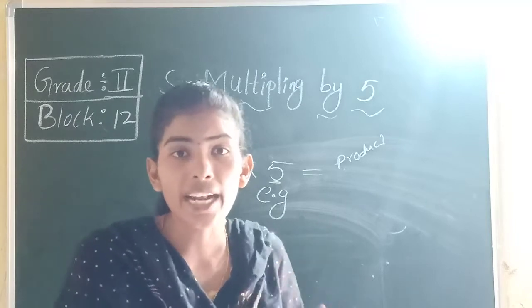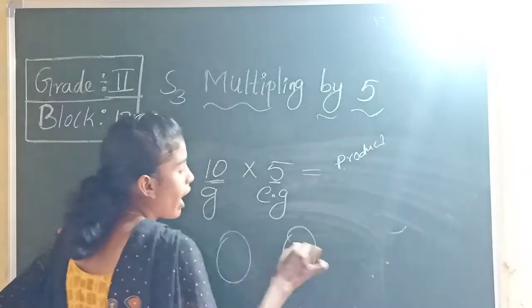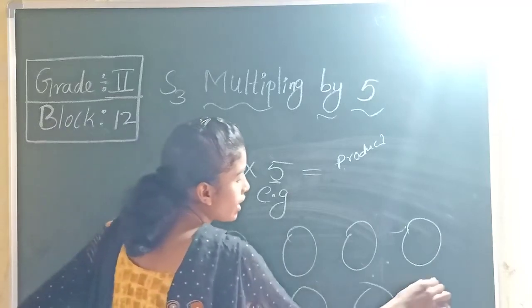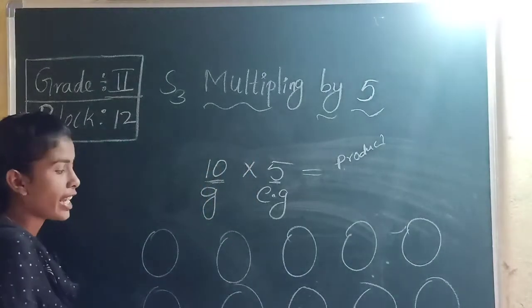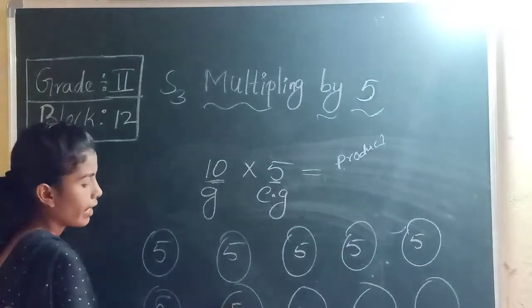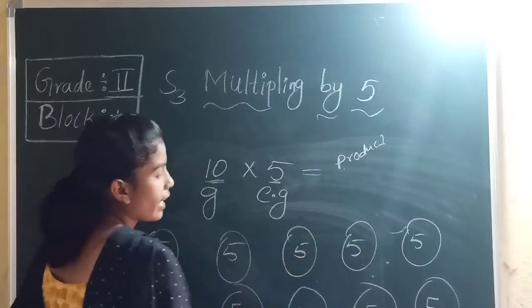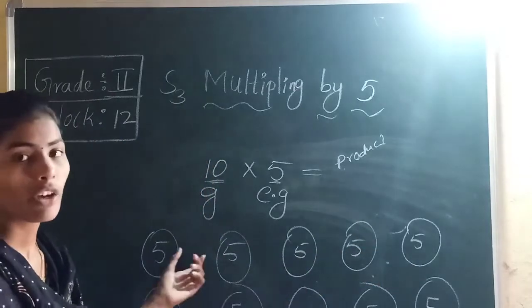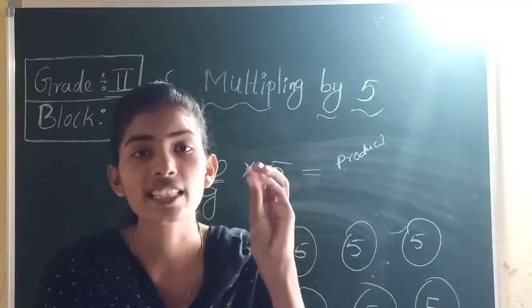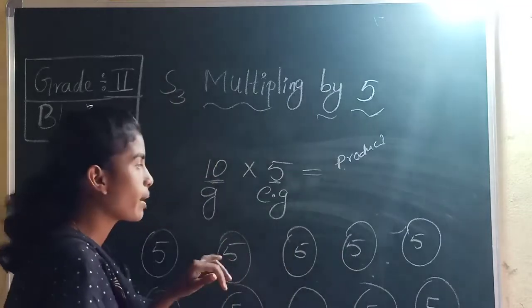So for 10 groups of 5, we have to skip count 5 ten times. We take 10 groups and in each group there are 5 things. Have you learned 5 skip count in previous classes? Yes. So use 5 skip count: 5, 10, 15, 20, 25, 30, 35, 40, 45, 50. We reached 50, so the answer is 50.